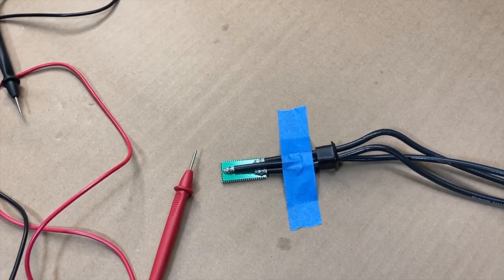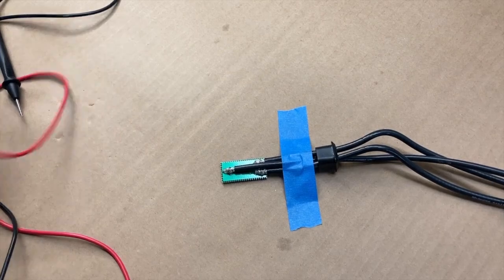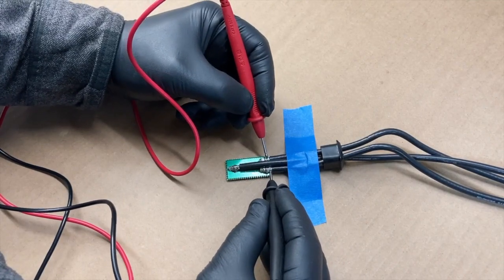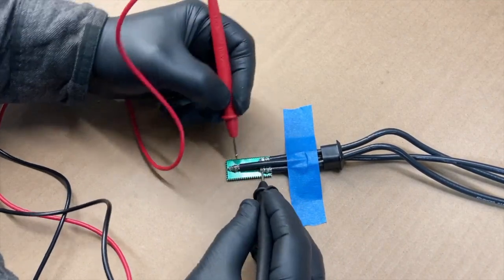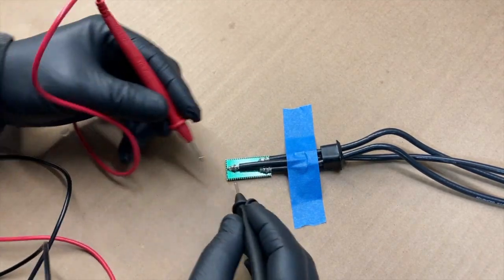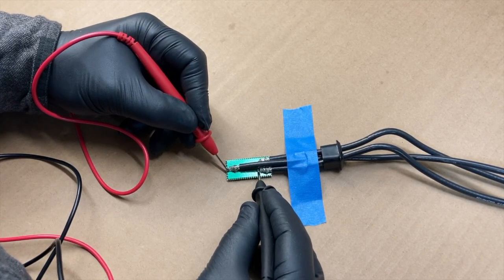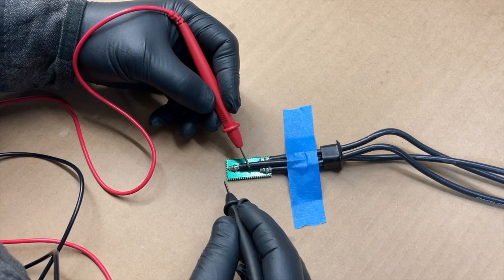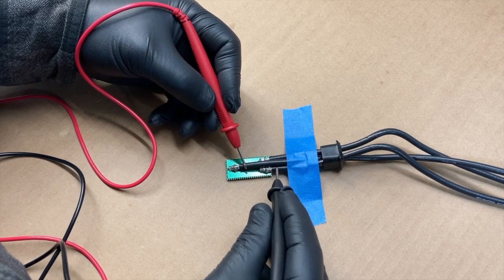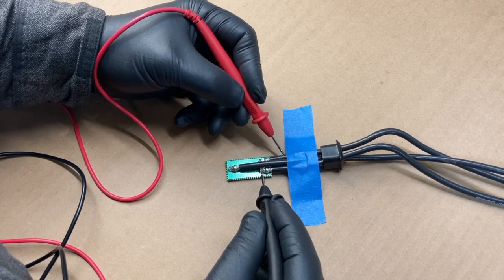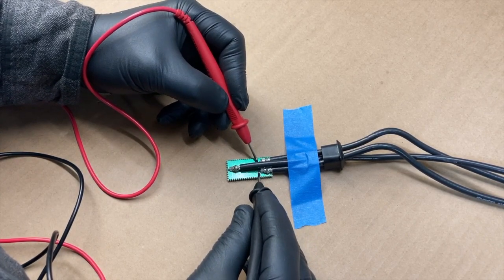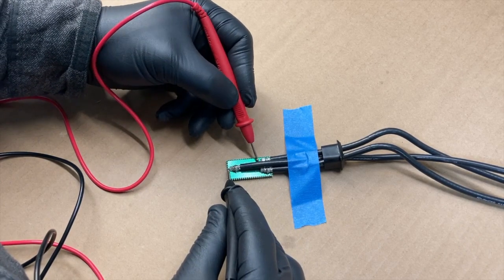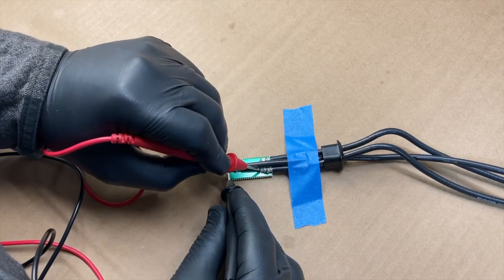All right so I have my meter here and I just have it on simple continuity. So if we go to shield to shield obviously that's good. Now if we go to center pin to center pin. So this one here is the main feed line, this one here is the two meter line and this one is the 70 centimeters. But if we go from center to center on 70 I don't get nothing, and if I go from my feed line to 70 I don't get anything but I do get it on two meters.